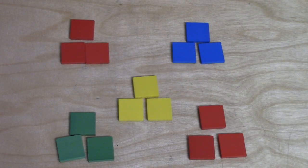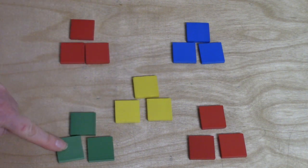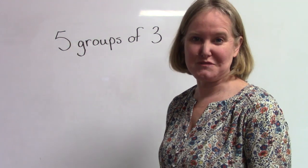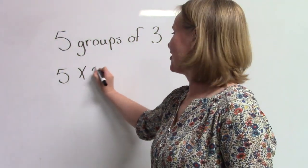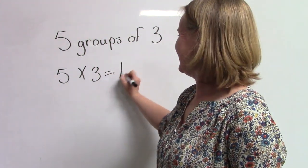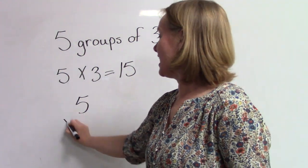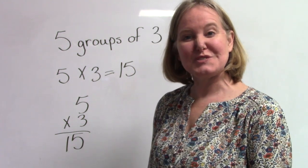How many groups of three do we have now? Well, five. Let's count these five groups by three: three, six, nine, twelve, fifteen. What about five groups of three? Five groups of three equals fifteen. We could also write this: five groups of three equals fifteen.